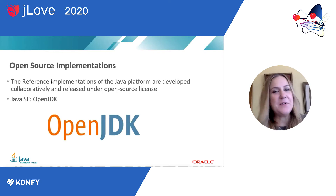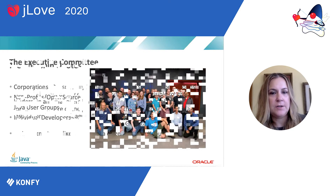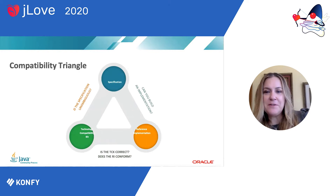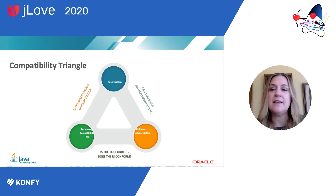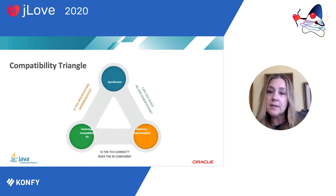To recap: JSRs developed through the JCP have three core elements — the spec, the reference implementation, and the TCK. Those three are really the heart of the JCP. That structure helps developers understand how Java technology is governed and overseen.